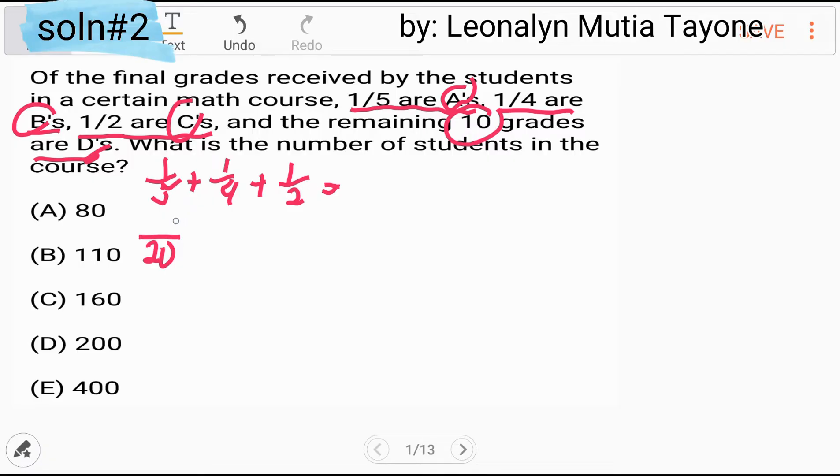20 divided by 5 equals 4 times 1 equals 4. Then pareho lang din, kopyahin na lang natin. 20 divided by 4 equals 5 times 1 equals 5. Then this is 20 and that is 10. So this is 19 over 20.